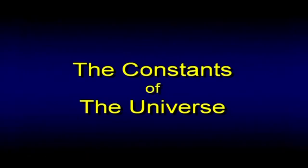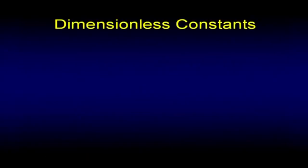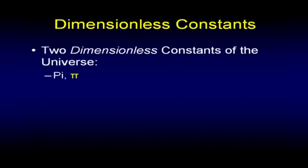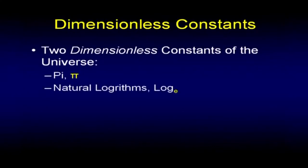I'd like to review something I think fits this topic perfectly — certain constants of the universe. It turns out that of all those constants we talked about, there are two that are dimensionless. One of them is pi, and the other one you may not have run into unless you've been in advanced math — and that's the thing called E, the base of what they call natural logarithms.